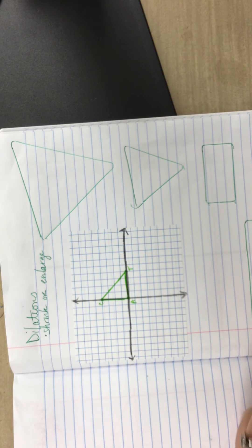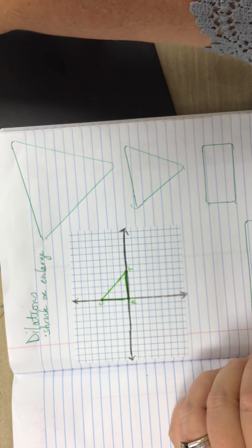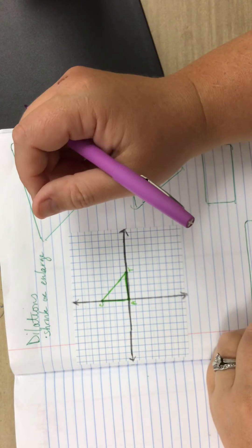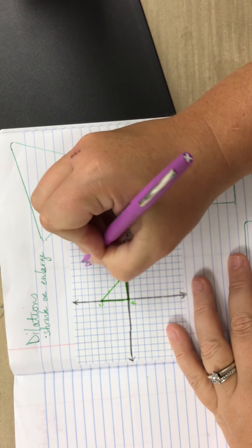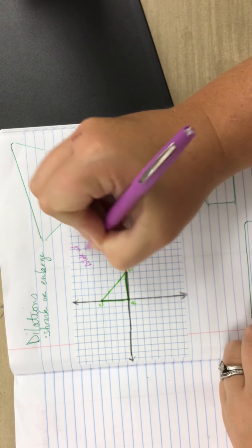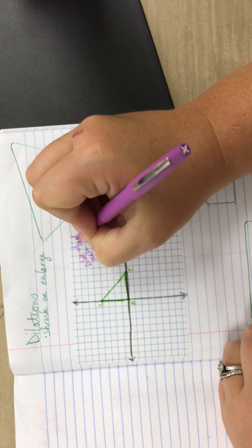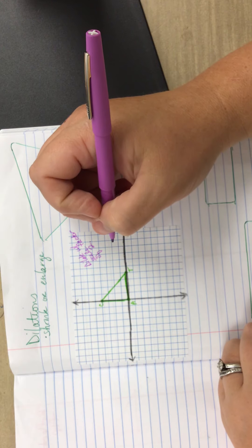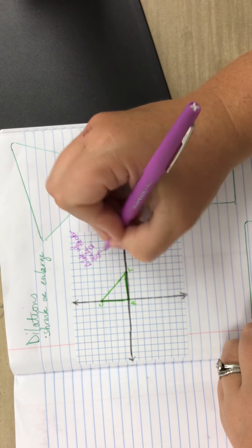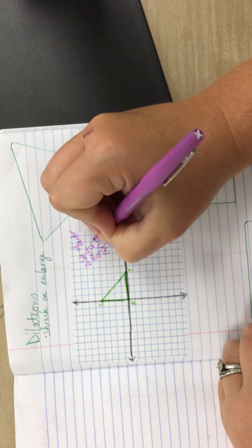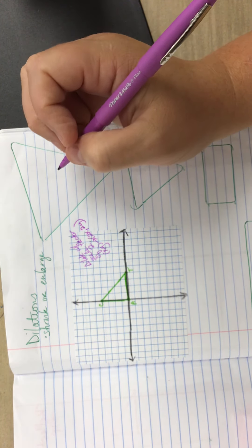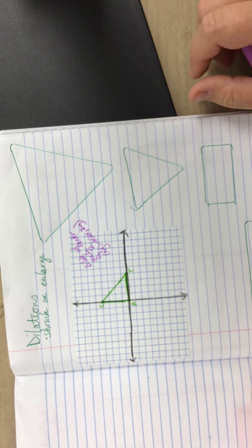So we're going to do two dilations on this page. The first one, we are going to dilate with a scale factor of two. So if you remember from the activity or the video we did, if it has a scale factor of two, our rule goes x,y to 2x, 2y. You're going to multiply your x and your y coordinate each by the scale factor. Okay, so I'm going to do that.